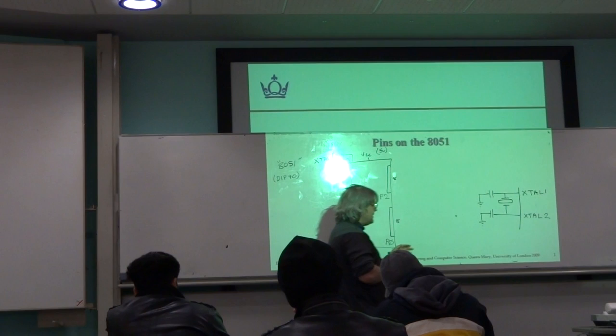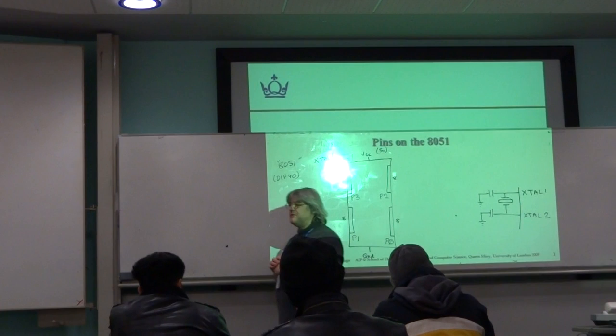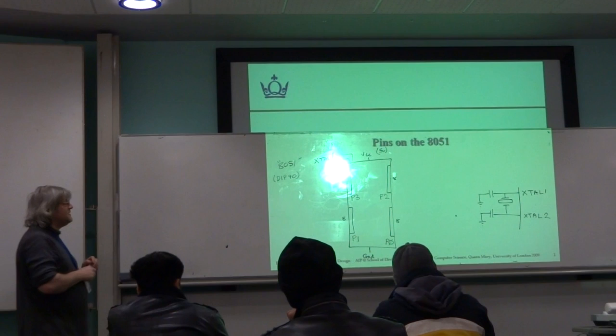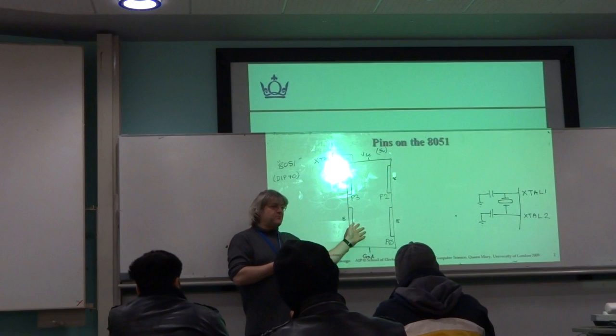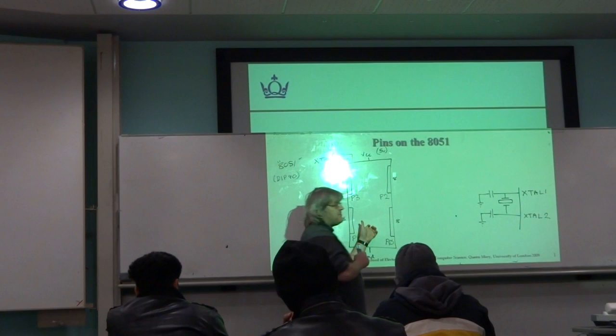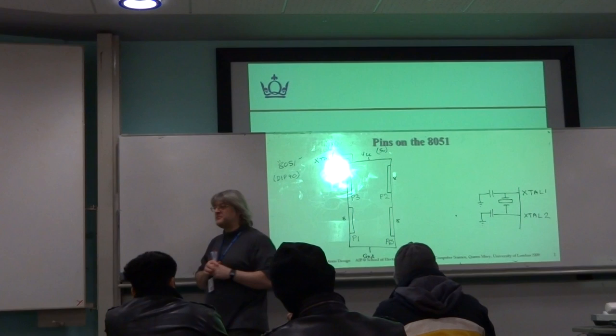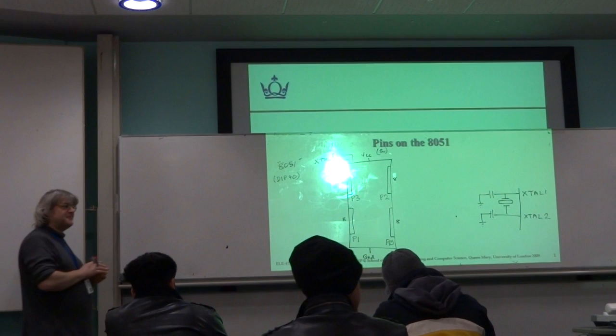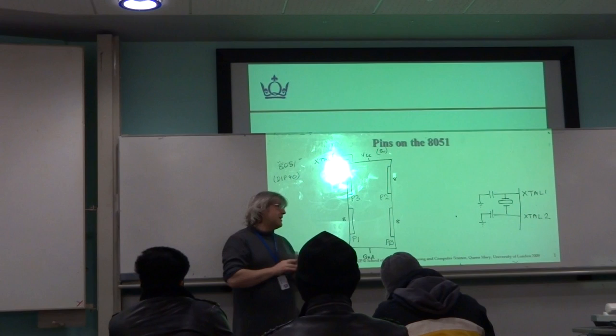The advantage of having the resonator crystal outside the device is you can choose the value of it that you want. So to some extent, you can control how fast the 8051 goes. Generally, you might say I just want it to go as fast as possible, and yes, you can do that. There will be an upper limit determined by the manufacturer, but you can get versions that can comfortably go up to about 30 megahertz. I know by today's standards that seems remarkably slow, but for an embedded system, that's not too bad.